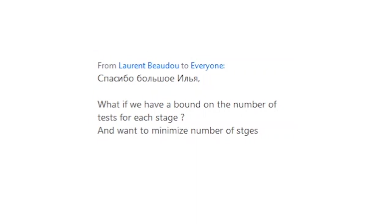For example, I don't know if it is possible to find three coins using only two stages — whether a two-stage algorithm for three coins with a matching lower bound exists. Maybe it is possible to find three coins using only two stages. I don't know.